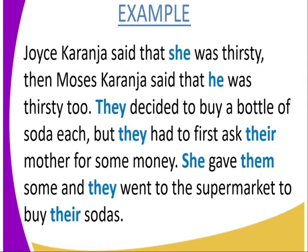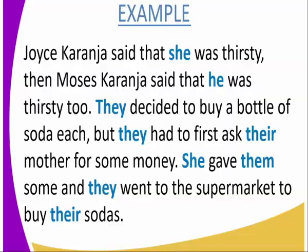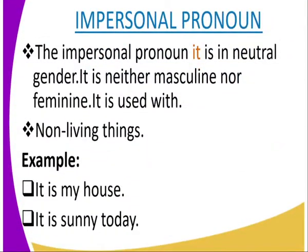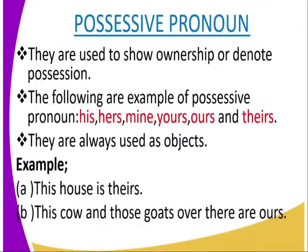From the examples, you can see we use the pronouns she and he to avoid repetition. When placing them in plural form, we use the pronoun they. Now we look at the impersonal pronoun. The impersonal pronoun 'it' is in its neutral gender — it's neither masculine nor feminine — and is mostly associated with non-living things such as weather and buildings. For example: 'it is sunny today,' 'it is my house.'